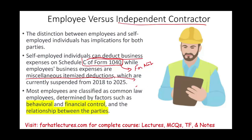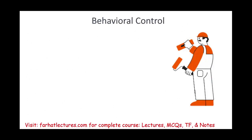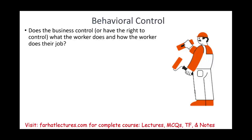Most employees are classified under common law employee rules. These rules are determined by factors such as behavioral control, financial control, and the relationship between the parties. To determine whether someone is an employee or an independent contractor, the IRS uses these rules. The first factor is behavioral control — does the business have the right to control what the worker does and how the worker performs their job?